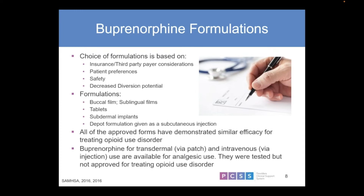The formulations include buccal film, sublingual films, and tablets — generic tablets take considerably more time to dissolve compared to films, while Subsolve dissolves quite rapidly. There are also subdermal implants and, more recently, a depot formulation — a subcutaneous injection that slowly dissipates using a polymer similar to long-acting injectable naltrexone. All of these have been approved and show similar efficacy in the treatment of opiate use disorders. Buprenorphine for transdermal patch or intravenous use is only available as an analgesic medication.